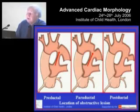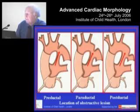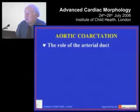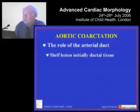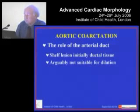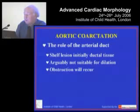What the clinician needs to know, what the surgeon needs to know, is: is it pre-ductal, is it paraductal, or is it post-ductal? All of which tells you that the arterial duct is crucially important in the etiology and location of aortic coarctation, because the shelf lesion itself, we know from histologic studies, initially was ductal tissue. Therefore, shelf lesions arguably are not suitable for dilation when seen with a patent arterial duct, because obstruction almost certainly will recur.